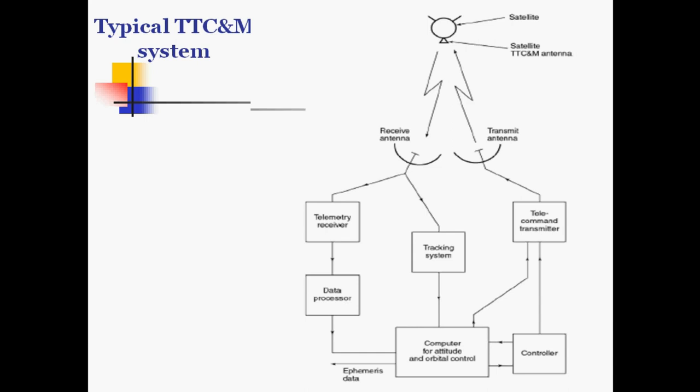Here we can see a typical telemetry tracking and command monitoring system. This is the satellite with its telemetry tracking and command monitoring antenna. The controller sends commands through the telecommand transmitter and antenna to the satellite. From the satellite, the TTC&M antenna sends information to the satellite receiver antenna of the earth station, which passes the signal to the telemetry receiver as well as to the tracking systems.